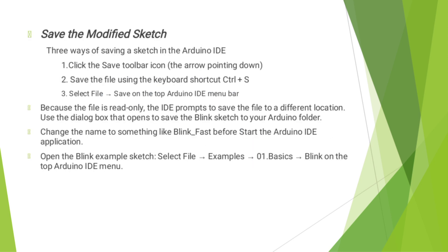Then, how to save the modified sketch. There are three ways to save your program. The first one is to click the save toolbar icon. The shortcut is Control plus S. Then select File and Save on the Arduino IDE menu bar. Because the file is read only, the IDE prompts you to save the file to a different location. Use the dialog box that opens to save the Blink sketch to your Arduino folder. Then change the name to something meaningful.